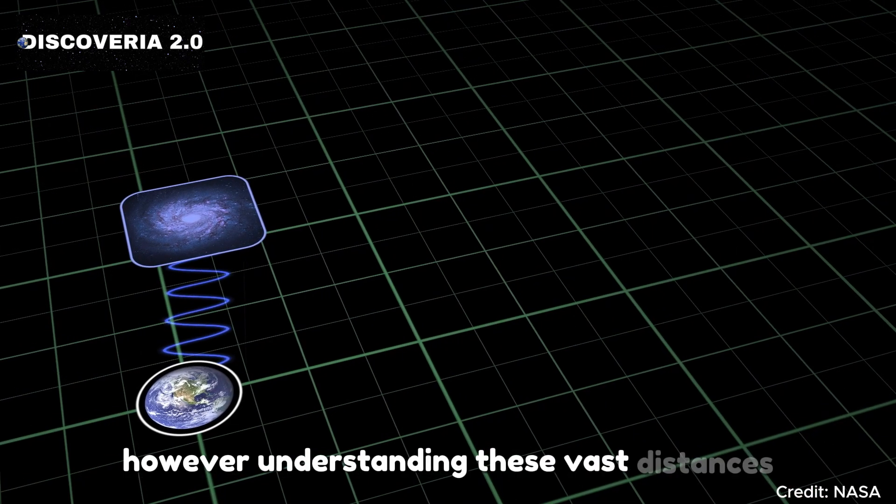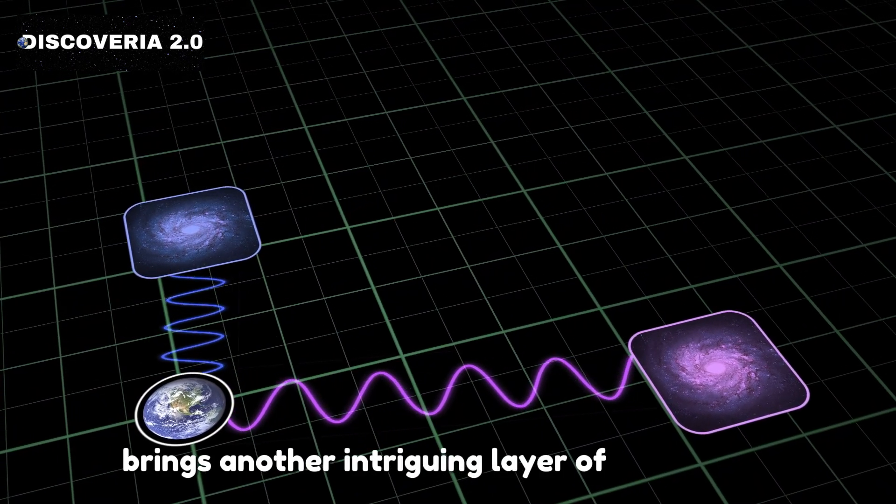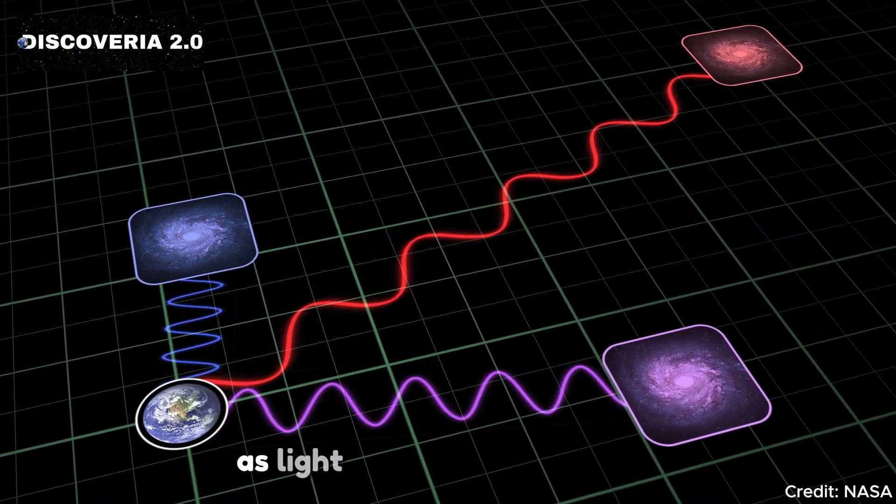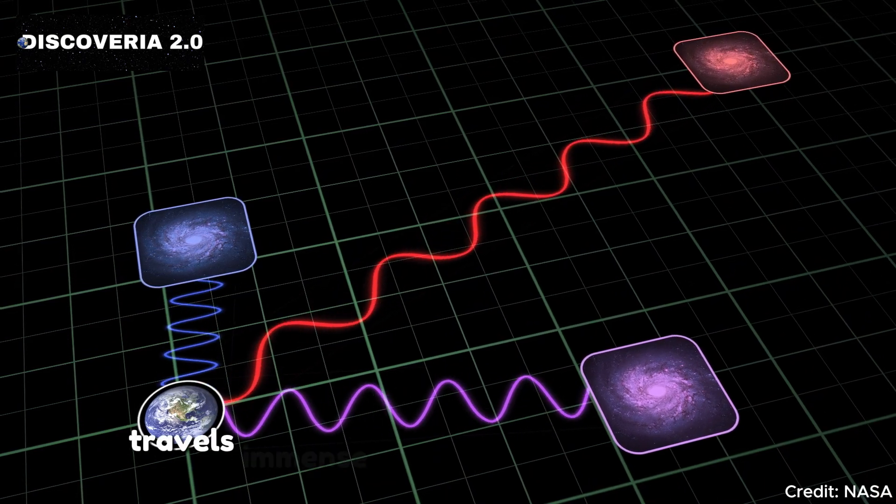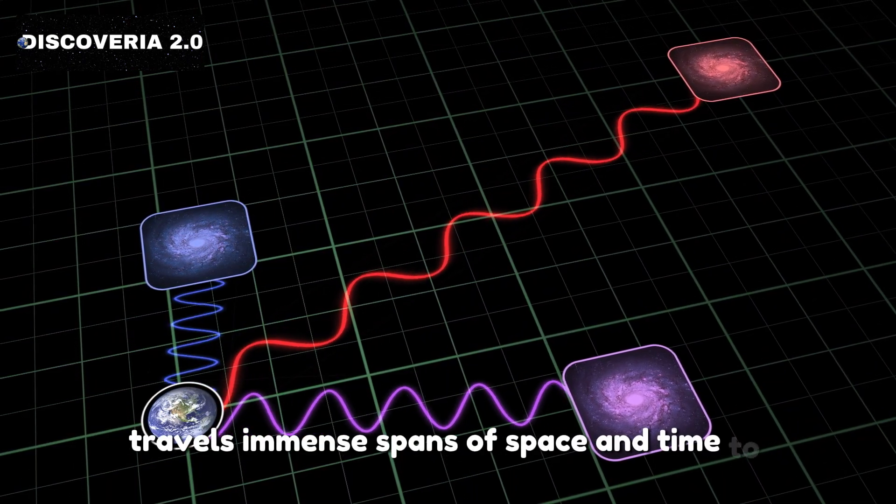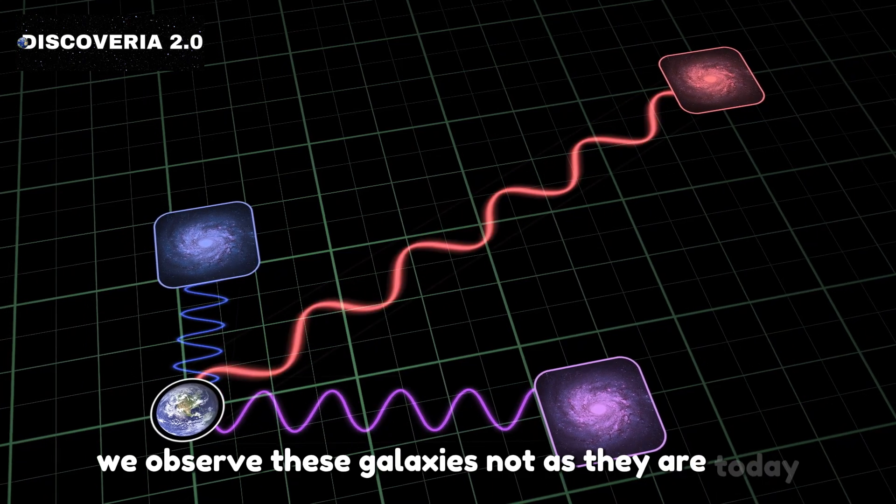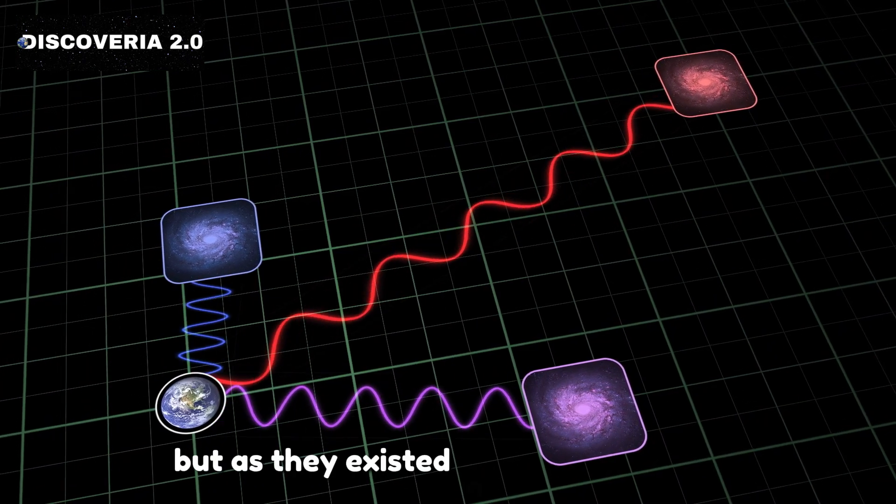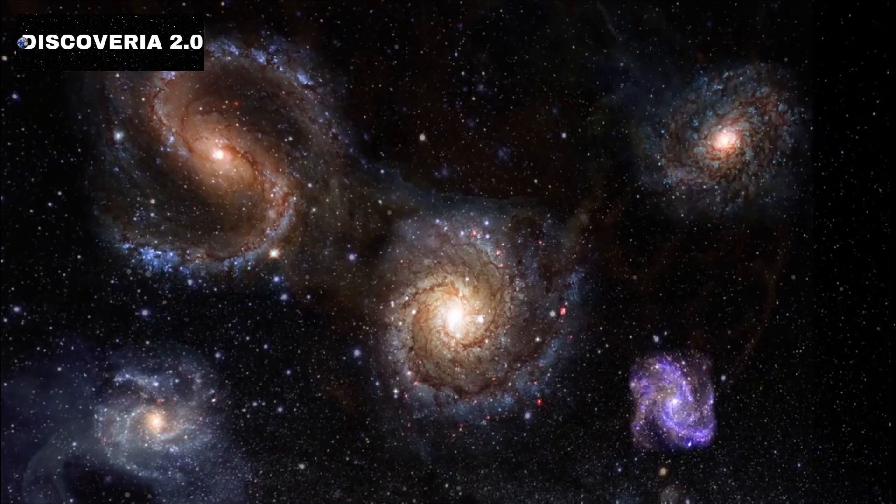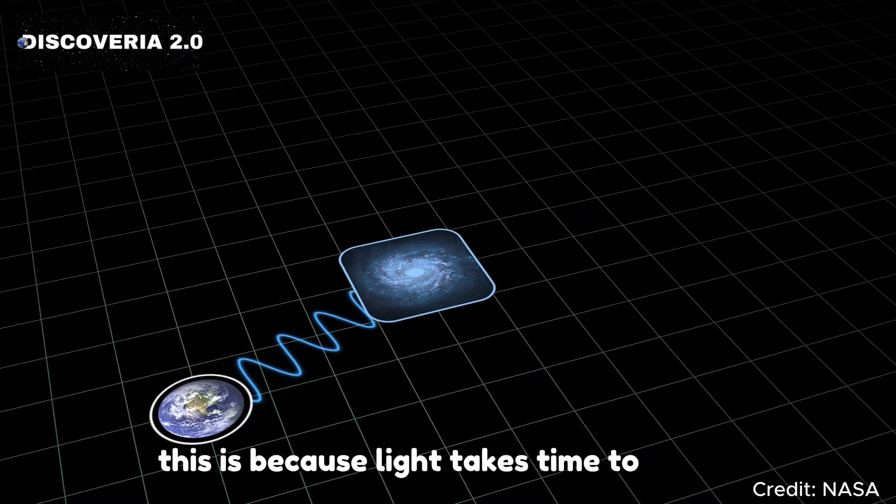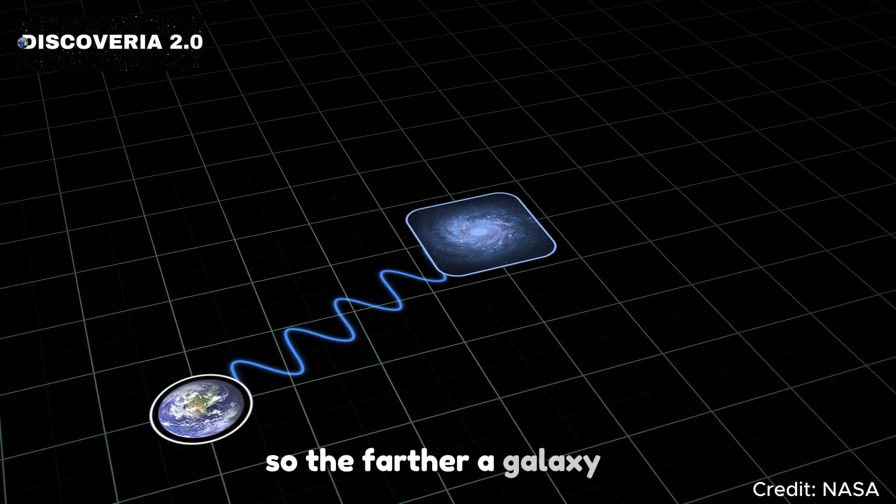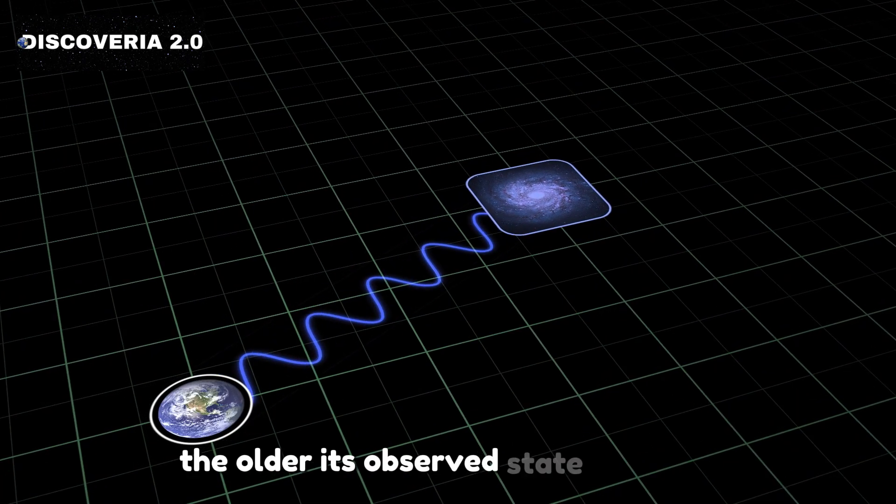Understanding these vast distances brings another intriguing layer of complexity. As light from distant galaxies travels immense spans of space and time to reach us, we observe these galaxies not as they are today, but as they existed in the distant past. This is because light takes time to travel, so the farther a galaxy is, the older its observed state becomes.